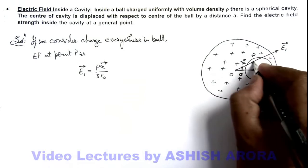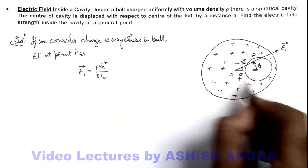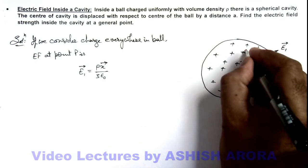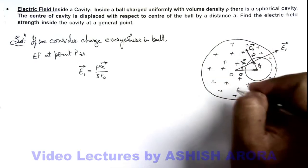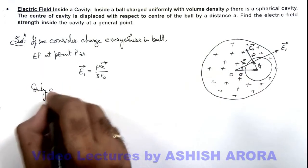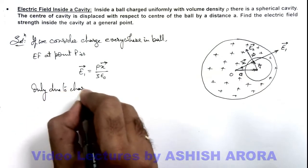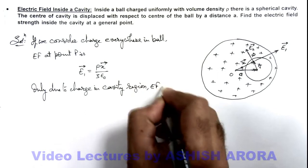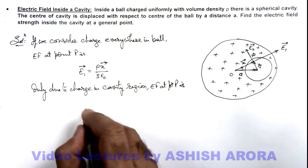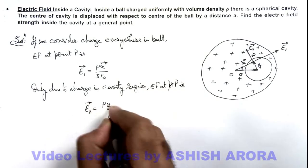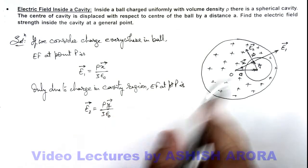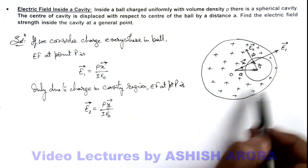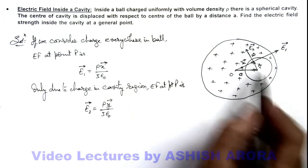Now say this point P is at position vector y with respect to the center of the cavity. At point P, due only to the charge of the cavity region, the electric field will be in the direction of y and is called E2. So E2 equals ρy / 3ε₀, since this electric field is along y vector. While calculating E2, we take only the charge within the cavity region as another sphere, so the electric field due to this charge is in the radial direction.